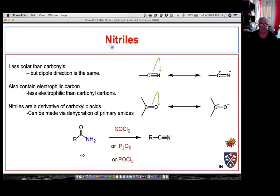The last carboxylic acid derivative I want to talk about are nitriles. Nitriles don't look like a carboxylic acid derivative but they're actually made from a carboxylic acid derivative.